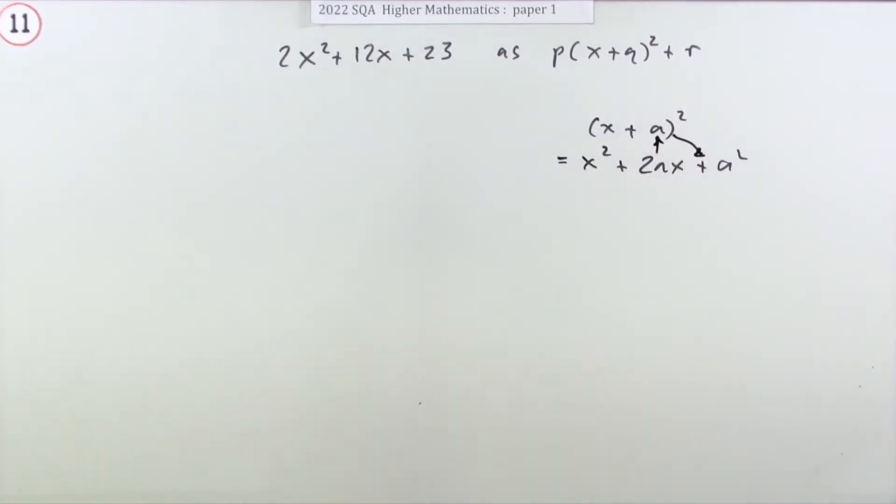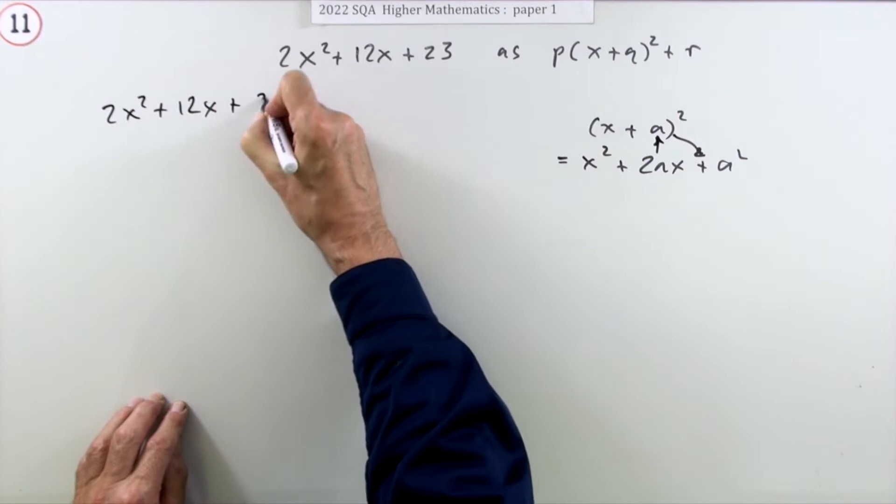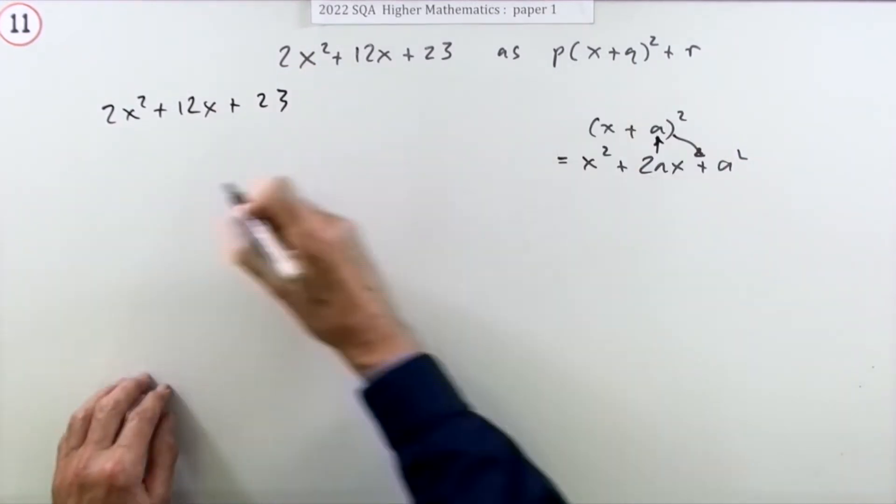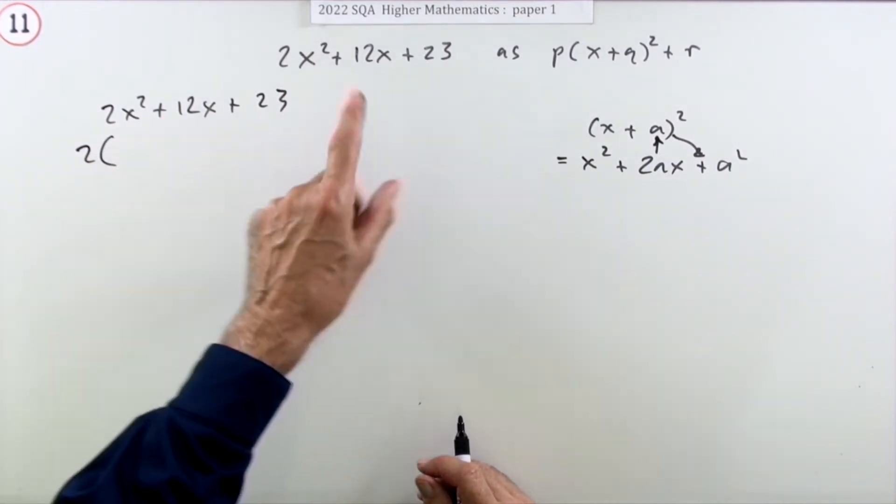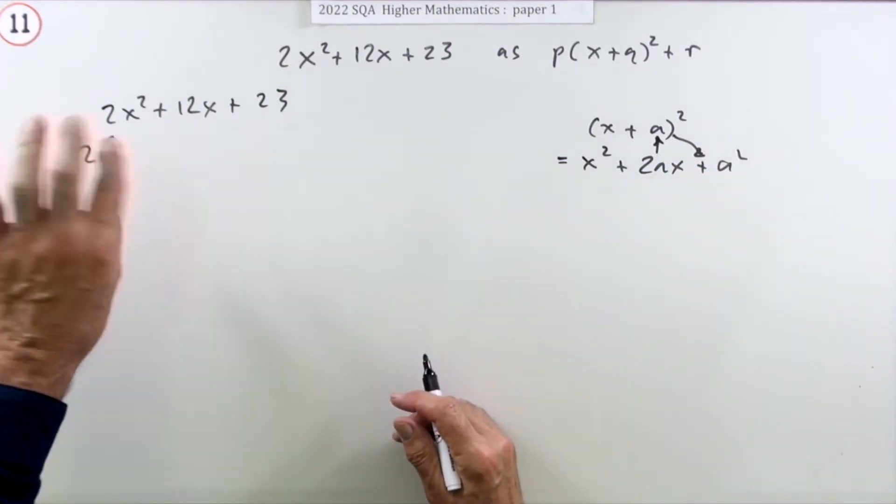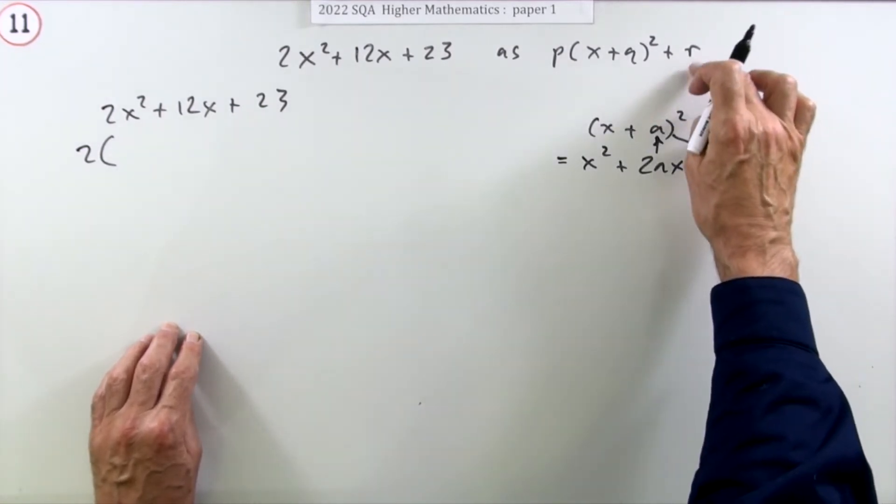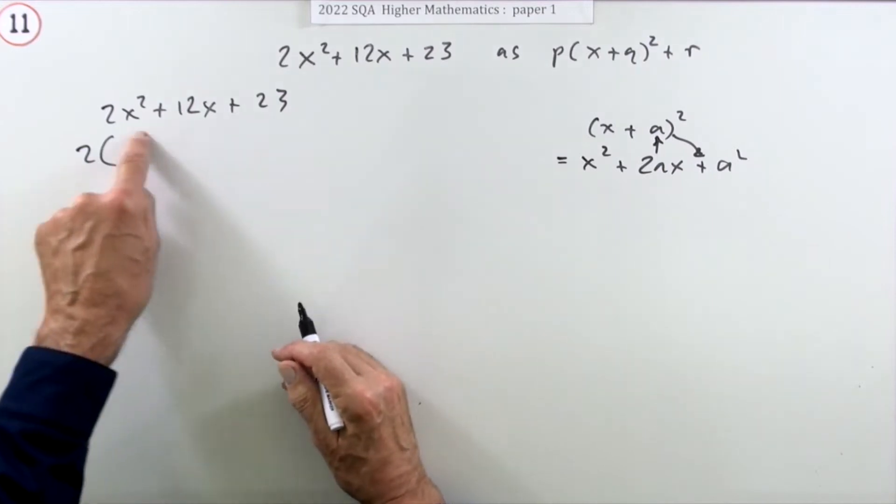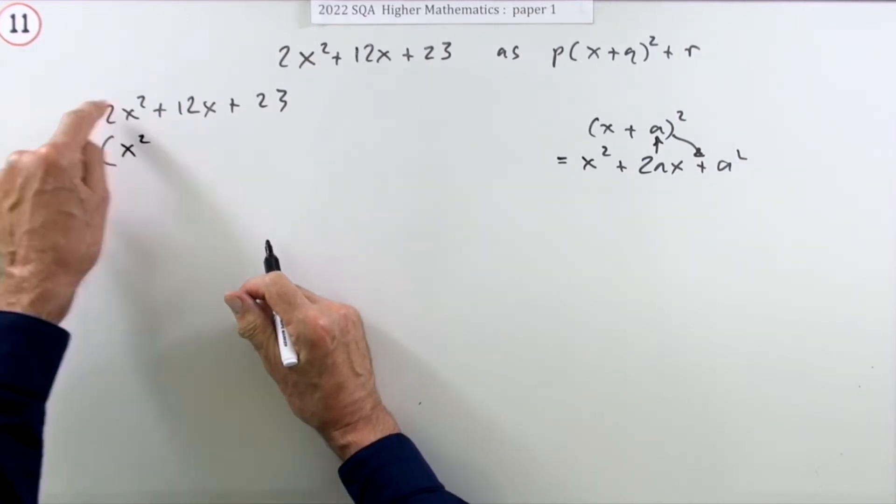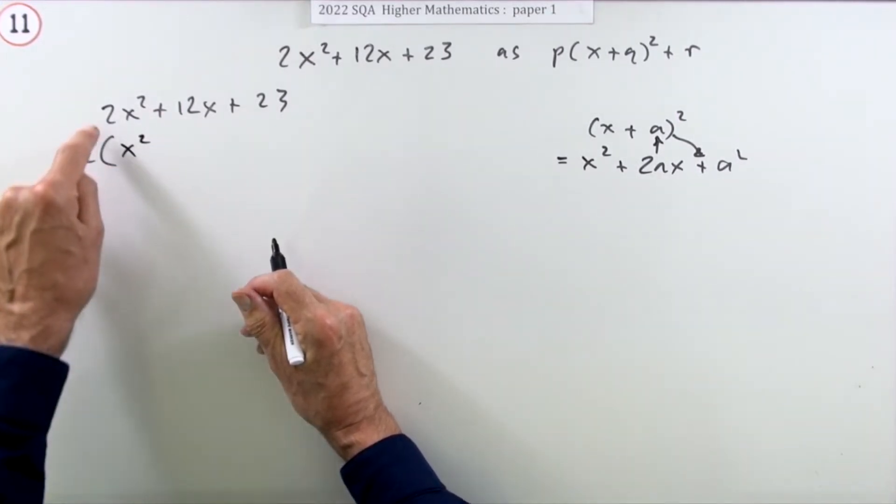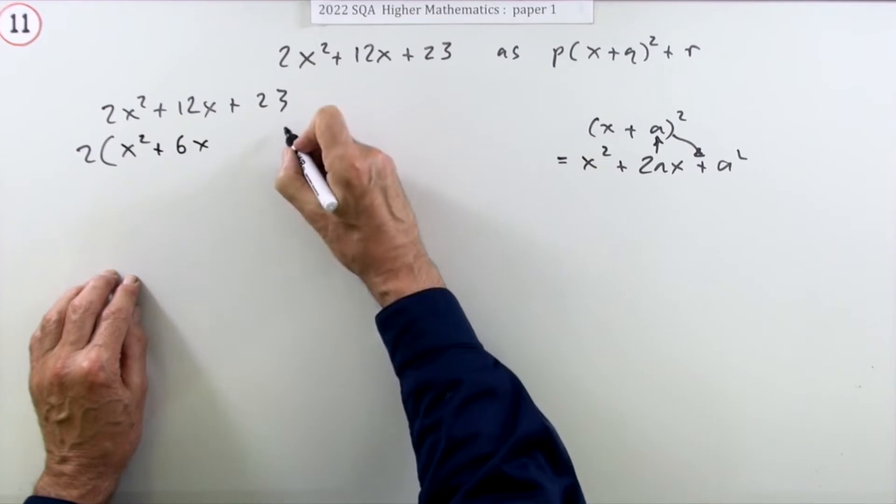So one technique would be this: put the expression down again. First of all, I want it to be a simple x, so take that two out. There are two techniques - you could take two out of everything, and there would be cases where that would be appropriate, but not here because you can see it says put it into this form where r is separate. So it's only this part I'm going to work with. I'm going to ignore the 23.